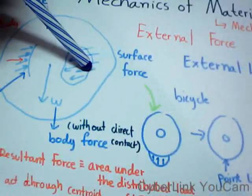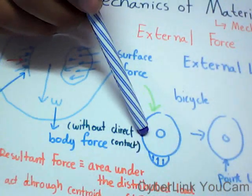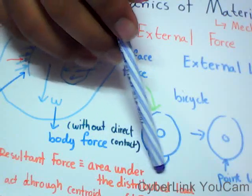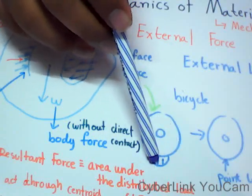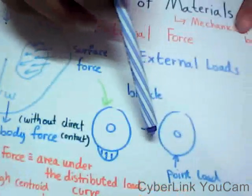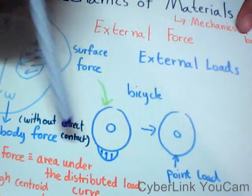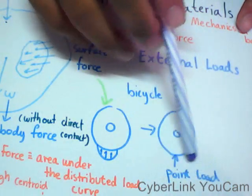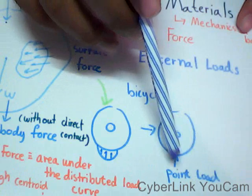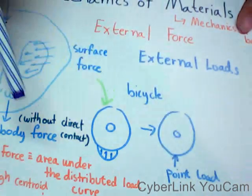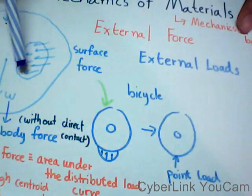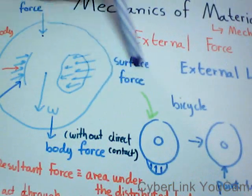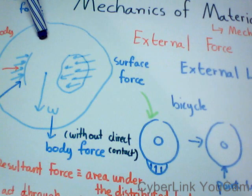For surface force, for example, when you ride a bicycle, the force on the ground that is exerted on the bicycle acts over the area of contact. But for simplification, we can idealize this surface force into a point force or point load, where the load acts on a single point. So if you reduce the area to a point, you change from a surface force to a concentrated force.